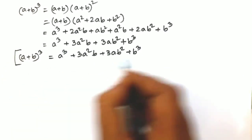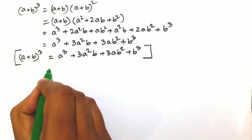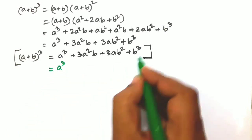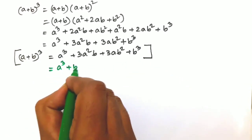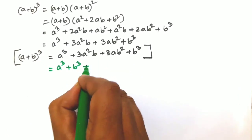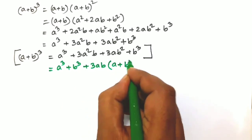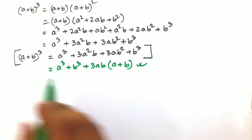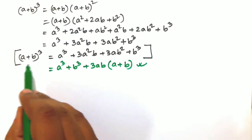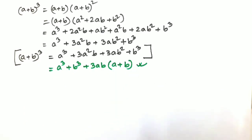This is one of the most important formulae of class 8. The formula can also be written by taking 3ab common from the middle terms: (a + b)³ = a³ + b³ + 3ab(a + b). This is another useful expression of the same formula.